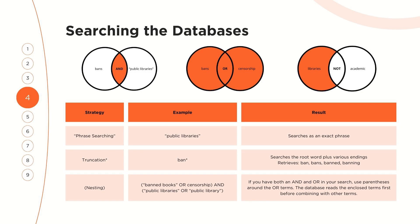Next, we have truncation. Truncation allows us to search for a root word and its alternative endings. For instance, if we search 'ban' and add the truncation symbol — an asterisk — after the N, the database will search for articles that mention ban, bans, banned, and banning. Finally, we have nesting, which brings us back to order of operations from 8th grade math. If you're using multiple Boolean operators, enclose your OR terms in parentheses. The database will read what's inside the parentheses first, then combine it with what's outside.